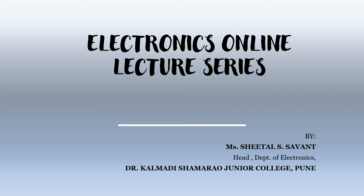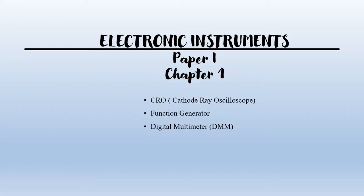Welcome all to the Electronics Online Lecture Series. We will be discussing electronic instruments from Paper 1, First Chapter. In this chapter, there are three instruments: CRO, Cathode Ray Oscilloscope, Function Generator, and Digital Multimeter.